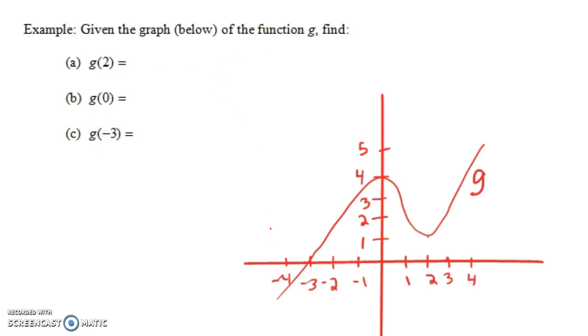So how do we find g of 2? Well, 2 is the input, so if we go over here to 2, what is this point right here? Well it looks like this is at a height of 1, so this is the ordered pair 2 comma 1. So g of 2 would be 1.